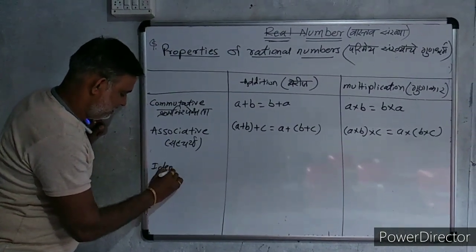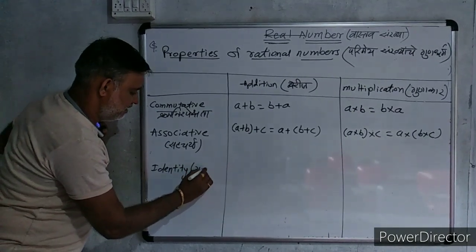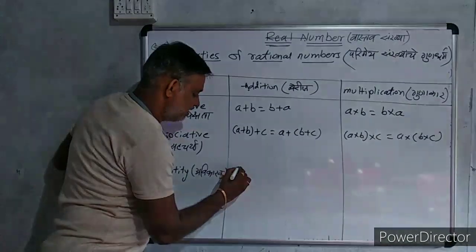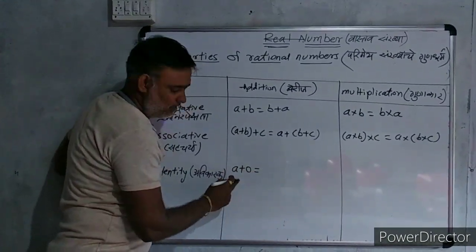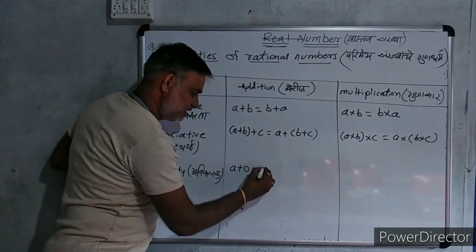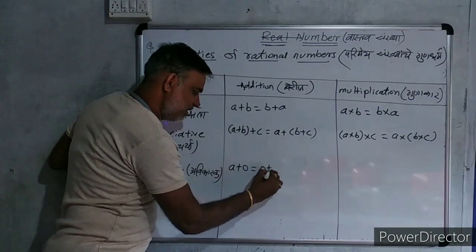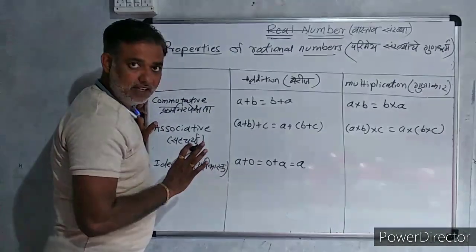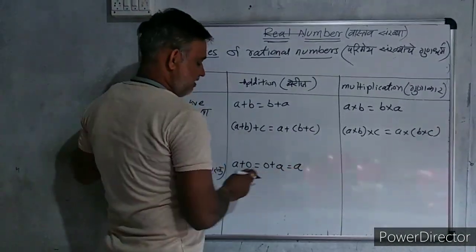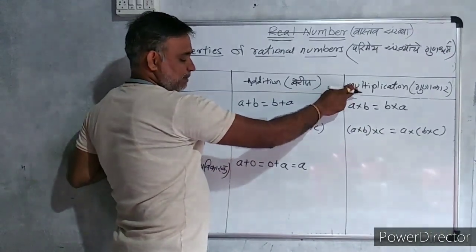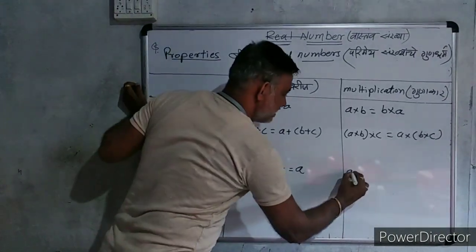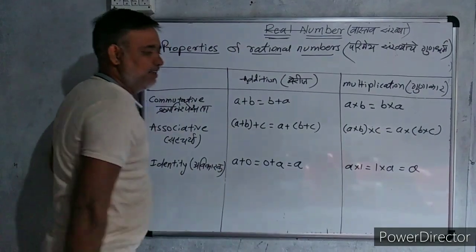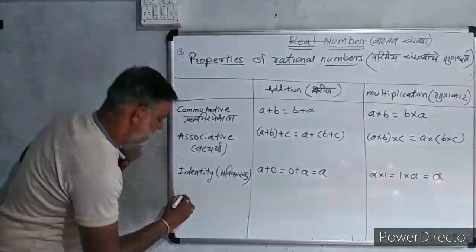Third. Identity. What is identity? Identity means what? We know that A plus 0. If we add 0 in any number, identity is 0 plus A is equal to A. That is identity. On another side, in case of multiplication, we use A into 1 is equal to 1 into A is equal to A. Means they are same. So, it is called identity.